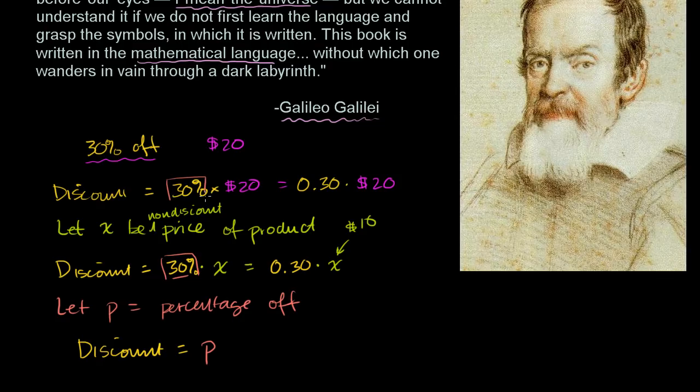That's the percentage off times the product in question. Times the price, the non-discount price of the product in question. Well, that was X. The discount is equal to P times X. Now this is really interesting. Now we have a general way of calculating a discount for any given percentage off and any given product X.